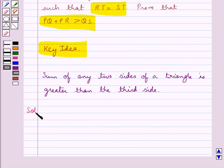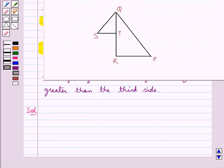Now we move on to the solution. We are given in the question that RT is equal to ST and we need to prove that PQ plus PR is greater than QS.